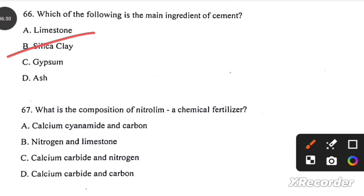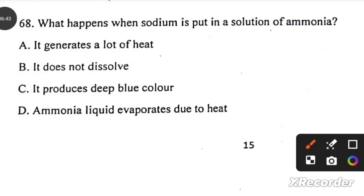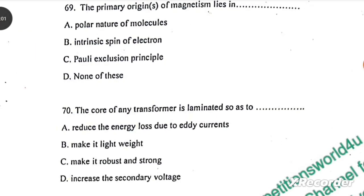What is the composition of nitrogen? A chemical fertilizer. Calcium cyanamide and carbon. What happens when sodium is put in a solution of ammonia? It produces deep blue color. The primary origin of magnetism lies in hydrogen.